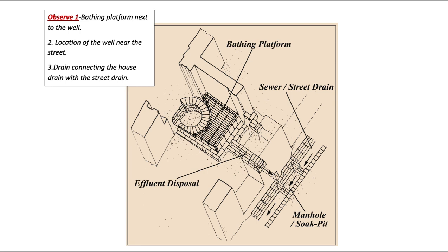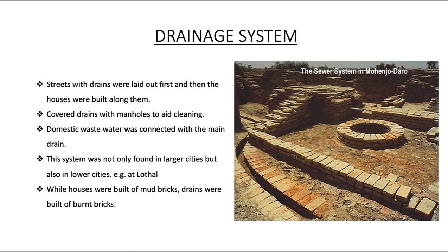There was a bathing platform next to a pen, and the well was located near the street so the house drain could connect to the street drain. There was a manhole, a soak pit, and effluent disposal. In the drainage system of Mohenjo-daro, streets with drains were laid first and houses built along them. Covered drains with manholes aided cleaning. Domestic waste water connected to the main drain. This system was found not only in larger sites but also in smaller ones like Lothal. Drains were always built of burnt bricks.